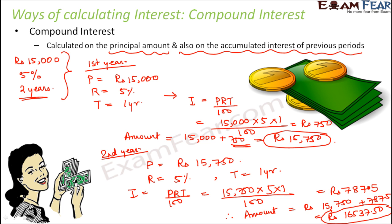So this is how much money you get at the end of two years. You had kept Rs. 15,000 at the beginning, and after two years you would get Rs. 16,537.50. In simple interest, every year the rate of interest is calculated on the principal amount. Whereas in compound interest, every year the rate of interest is calculated on the amount of the previous year — so basically you are getting some interest on the interest also.